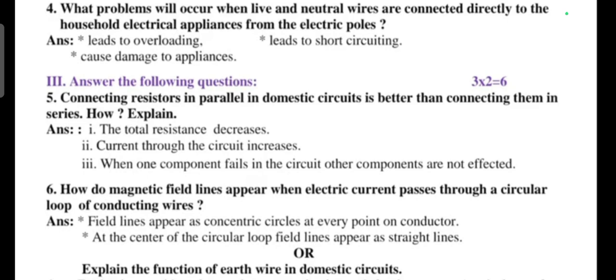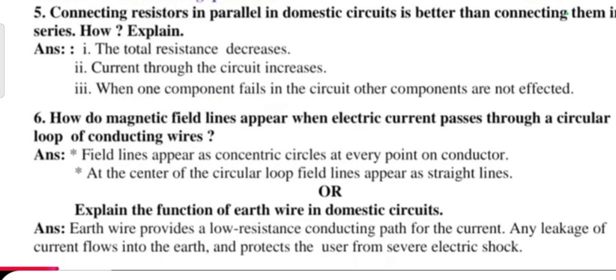Question number six: how do magnetic field lines appear when electric current passes through a circular loop of conducting wire? Field lines appear as concentric circles and every point on conductor. At the center of the circular loop, field lines appear as a straight line. Or, question: explain the function of the earth wire in domestic circuits. The earth wire provides a low resistance conducting path for the current. Any leakage of the current flows into the earth, that protects the user from severe electric shock.